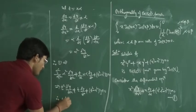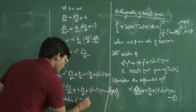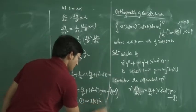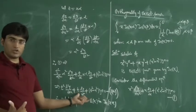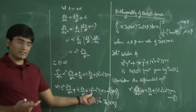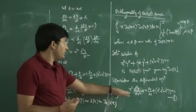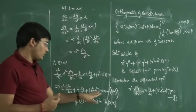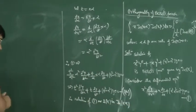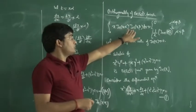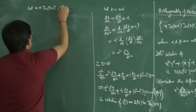Therefore, the solution of equation 1 is Jn(xα), because this is the Bessel equation and its solution is Jn(t), and in place of t we have xα. Now let u = Jn(xα) and v = Jn(xβ), so that u and v are solutions of equation 1.